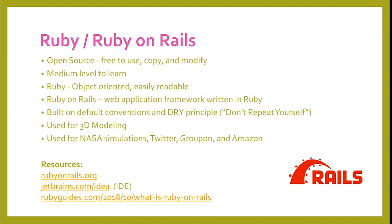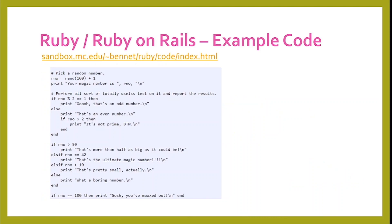Ruby and Ruby on Rails are open source, free to use, copy, and modify. They're medium level to learn. Ruby is object-oriented and easily readable. Ruby on Rails is the web application framework written in Ruby. They're built on default conventions and the DRY principle, which means don't repeat yourself. They're used for 3D modeling, NASA simulations, Twitter, Groupon, and Amazon. Here's an example of Ruby and Ruby on Rails code.